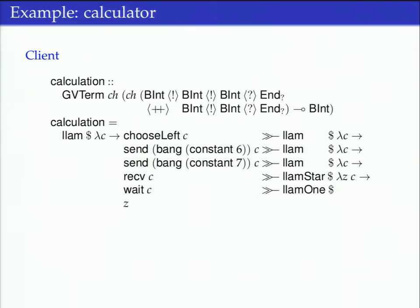We get back a result. This lam-star, the star was Jeff's naming I think, the thing returned by receive is a pair, a tensor of a channel and a value. This just deconstructs the tensor into the value and the channel. Then we have to wait to close the channel. This is the equivalent of unit, it doesn't bind anything, and then finally we just return the integer we got back.